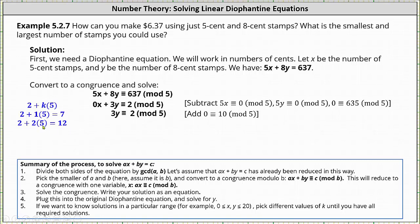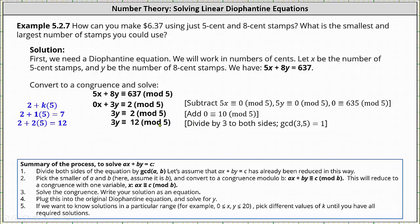Since two times five is 10, and zero is congruent to 10 mod five, we now add 10 to two, which gives us the congruence three y is congruent to 12 mod five. And now we can divide both sides by three. Just remember, when we divide both sides by three, we also need to divide five by the greatest common divisor of three and five, though in this case it is just one. Therefore, we divide three y by three, 12 by three, and five by one, which gives us y is congruent to four mod five.